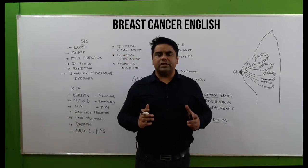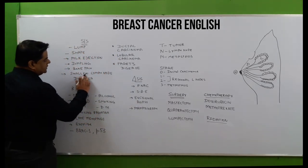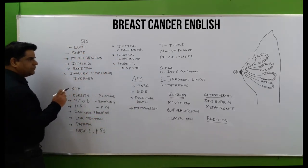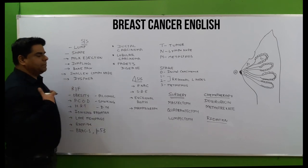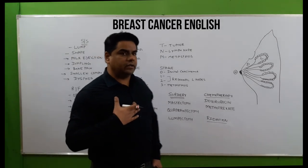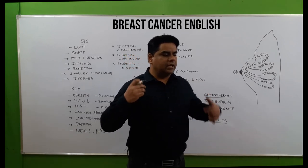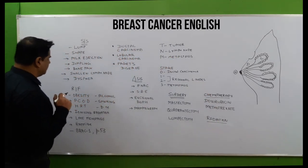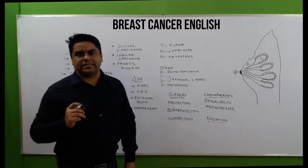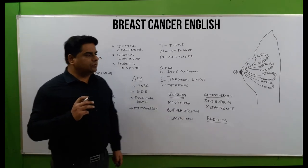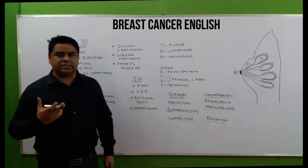A lot of lymph nodes are present in the breast area for drainage of lymphatic fluid, so there can be swelling of the lymph nodes — lymphadenopathy. As the ribs and intercostal muscles are affected, and with excessive metastasis over the breast area, dyspnea or difficulty in breathing can also occur.